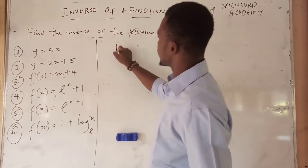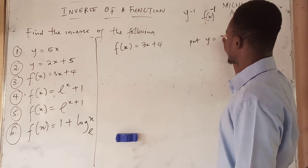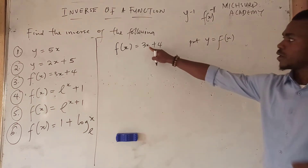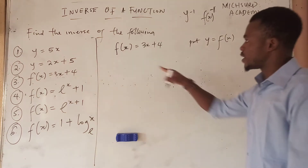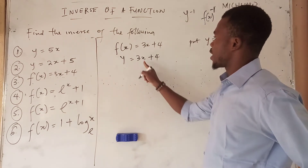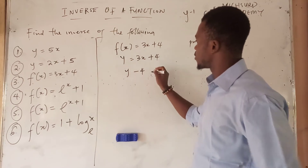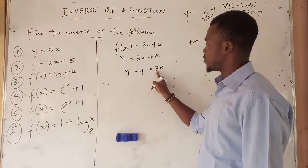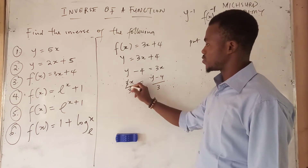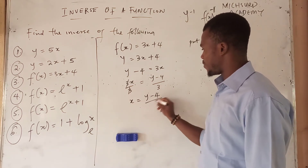For the third one, we have that f(x) is equal to 3x plus 4. Here, we are going to put y equal to f(x) — because y is equal to f(x) since it's a function that depends on x. Therefore, we write y is equal to 3x plus 4. Now we make x the subject formula: 4 moves over to the other side, giving y minus 4 is equal to 3x. Then we divide through by 3, so x is equal to (y minus 4) all over 3.